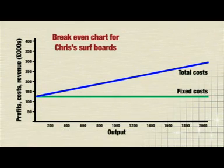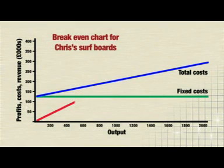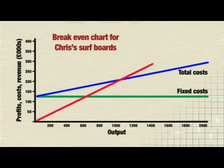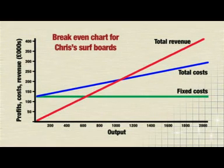Next to go on is the total revenue line. If Chris sold 2,000 surfboards at £200 each, his total revenue would be £400,000.